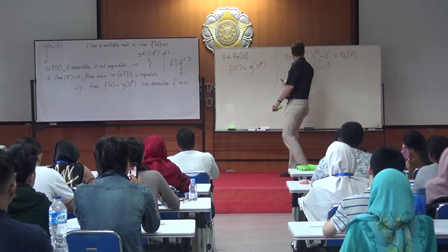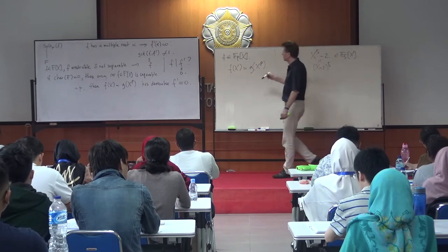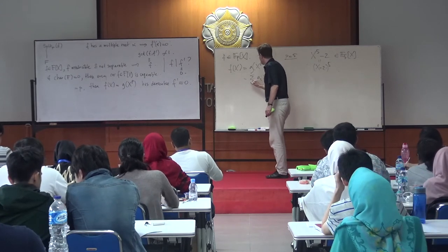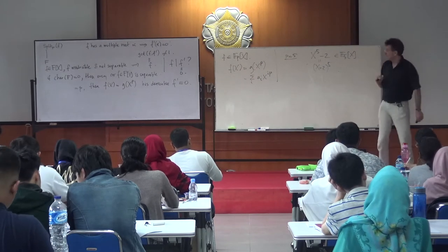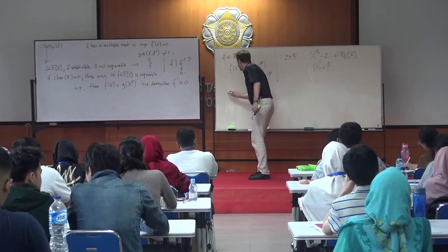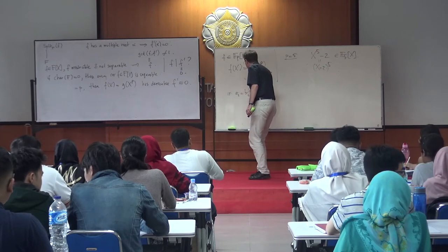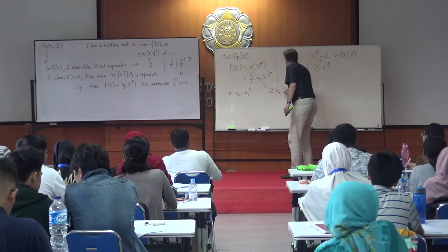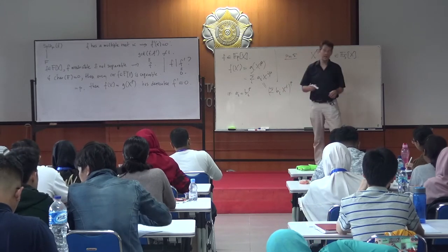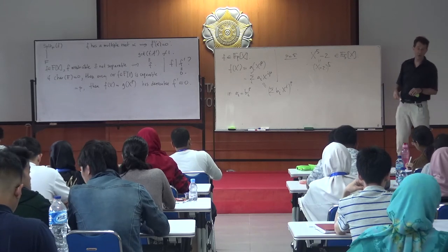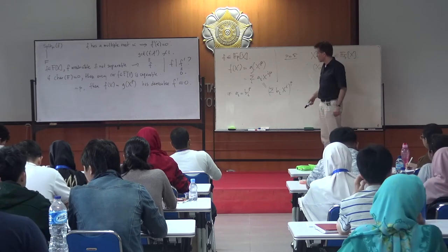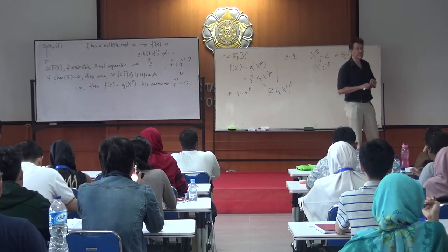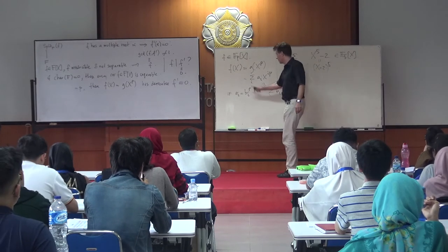If your ground field F has the property that everything is a p-th power, you just write your polynomial as sum a_i x^{ip}, and if all the a_i are p-th powers, you can factor the whole thing as (sum b_i x^i)^p. So the question is: can you have a field of characteristic p in which not all elements are p-th powers? If that happens, you can create irreducible polynomials that are indeed inseparable.